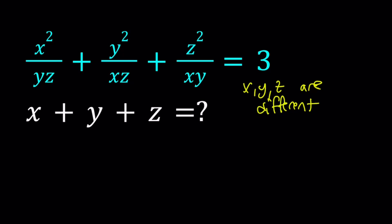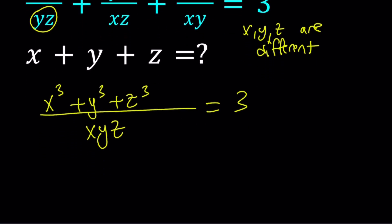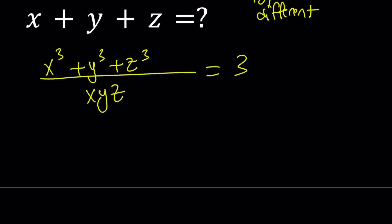Let's make a common denominator. I'm going to multiply this by x so that gives me x cubed and then y cubed and then z cubed. I'm going to divide all of that by the common denominator xyz and set it equal to 3. Now, let's go ahead and cross multiply here. x cubed plus y cubed plus z cubed equals 3xyz.